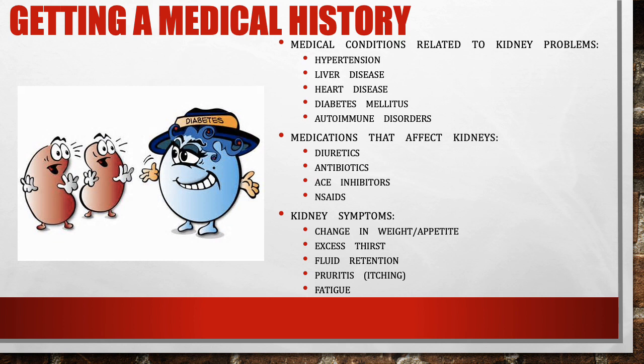When working with a patient with renal and urological problems, we want to ask some key questions. Start by asking about related medical conditions, including hypertension, liver disease, heart disease, diabetes, and autoimmune disorders. The biggest ones are hypertension and diabetes — the two most common causes of kidney problems — so a patient with these conditions would be at higher risk for kidney disease.